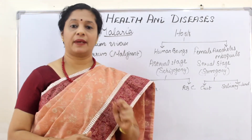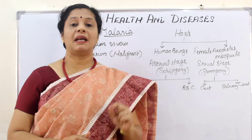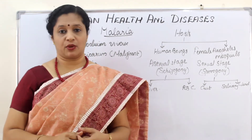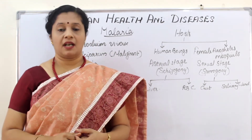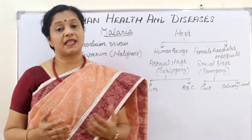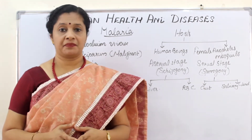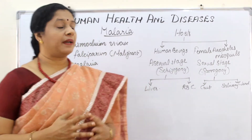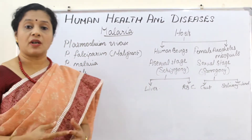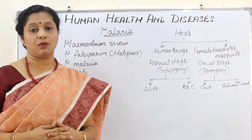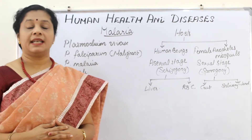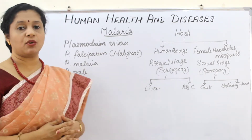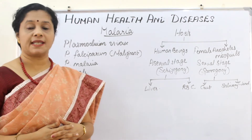Malaria is spread by a vector — the female Anopheles mosquito — and it is caused by a pathogen called Plasmodium. We have to learn the life cycle of Plasmodium in detail because it has two hosts. The causative agent, Plasmodium, is a protozoan, and there are different species of Plasmodium causing malaria.